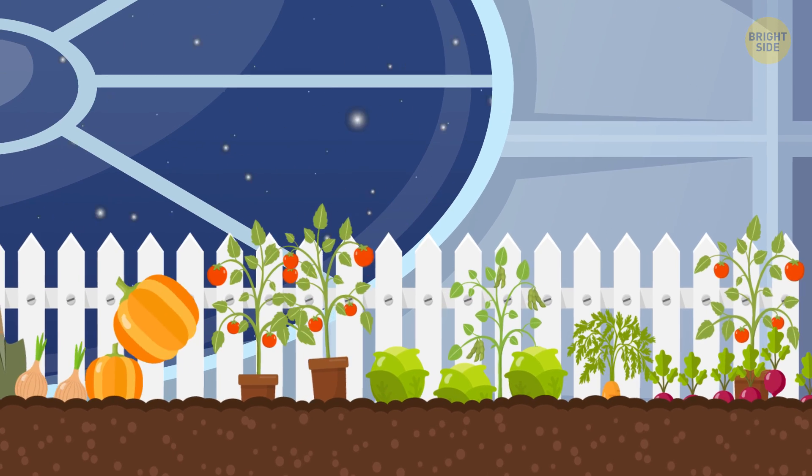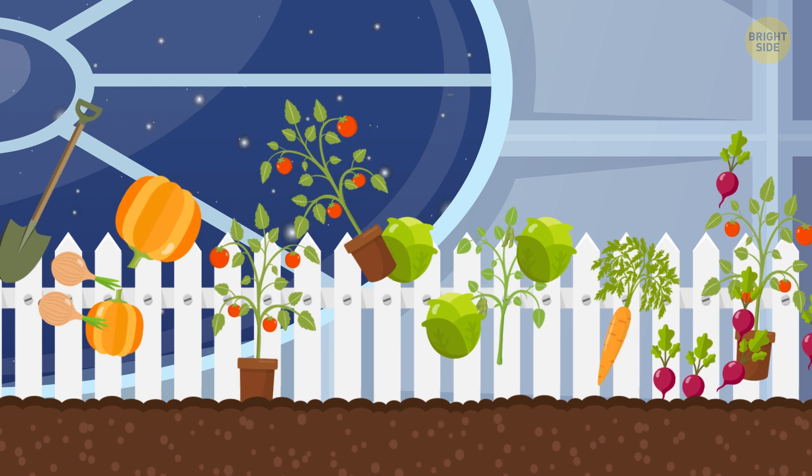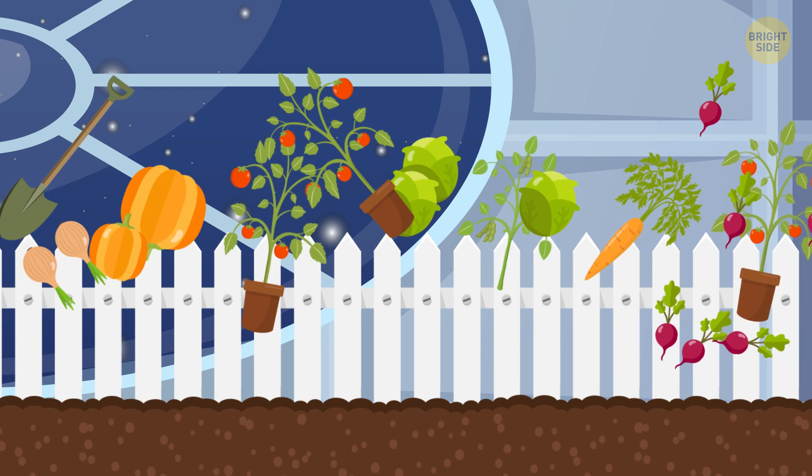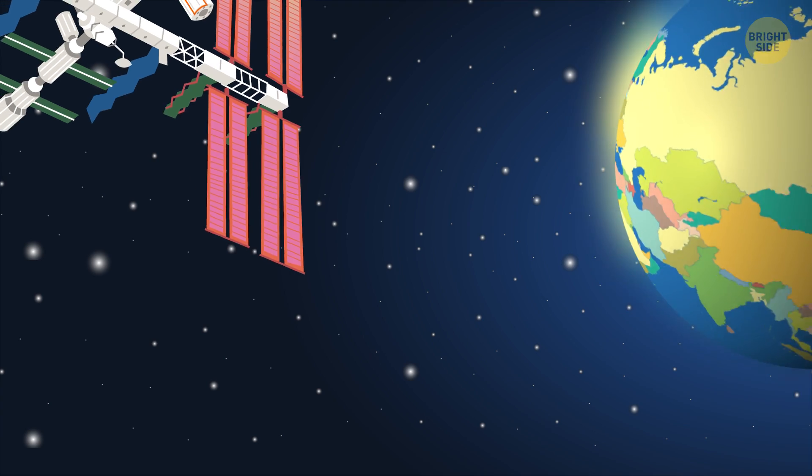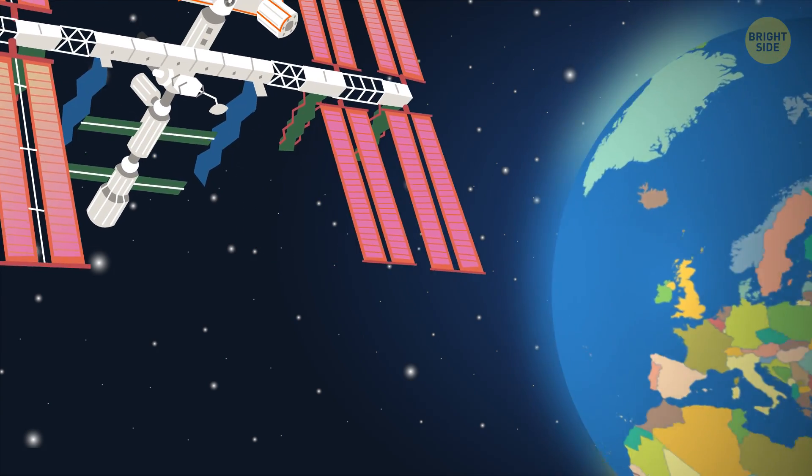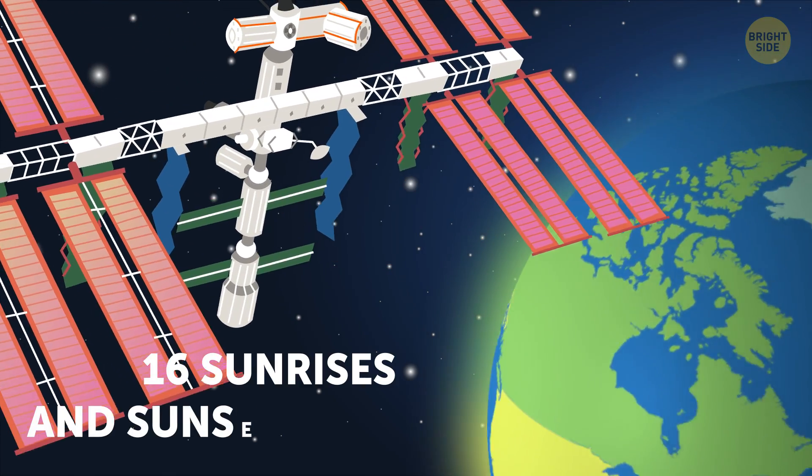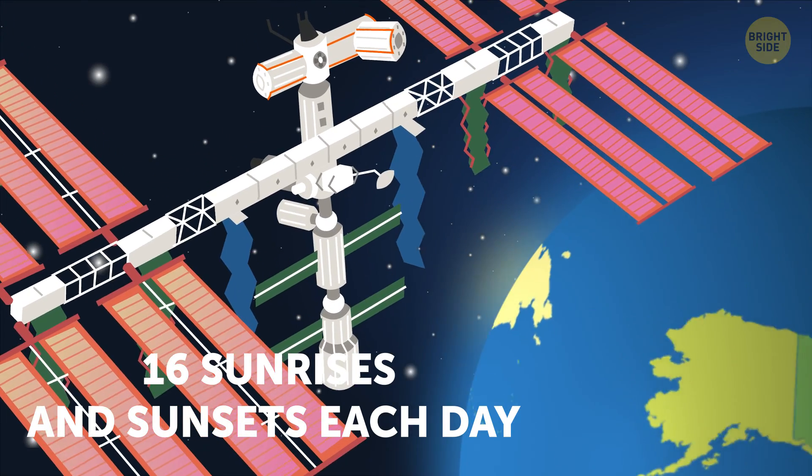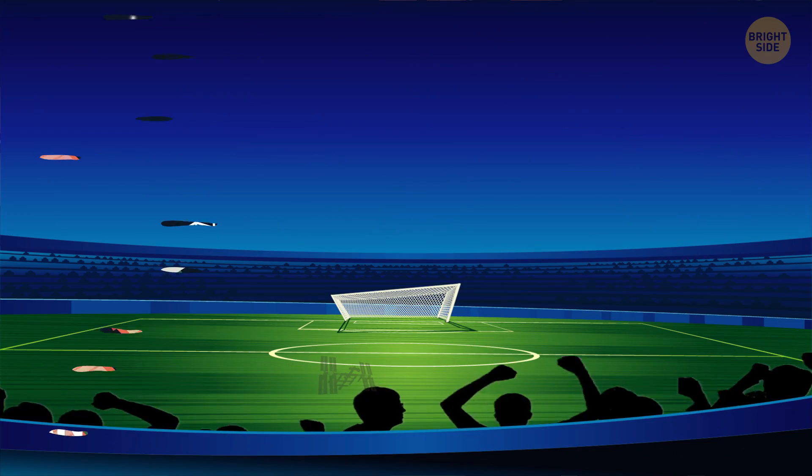But why can't they plant an indoor garden on the station to eat fresh fruits and veggies? Well, it's not as easy as it sounds. How can plants grow in the vastly different conditions of outer space? There's no gravity. Day and night are all over the place. The ISS sees 16 sunrises and sunsets each day. The air is dry. It's cold.